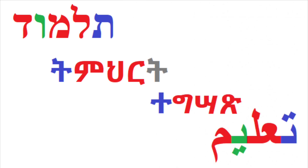You have the root, the T-prefix, and in this case a mater lectionis as well. And these various terms we just looked at — Talmud, Temhert, Taqshats, Ta'leem — they all bear the same basic structure which we've been discussing, with slight differences. And their meanings, their semantic ranges, overlap as well.